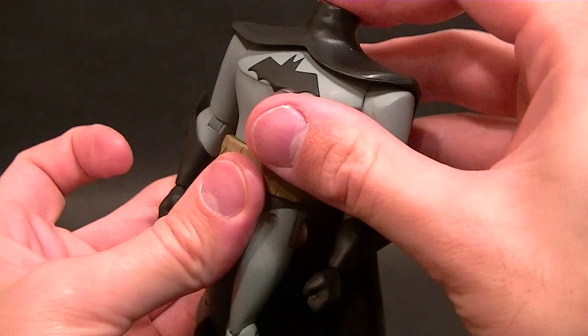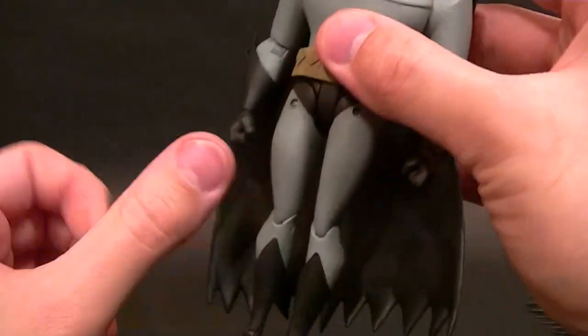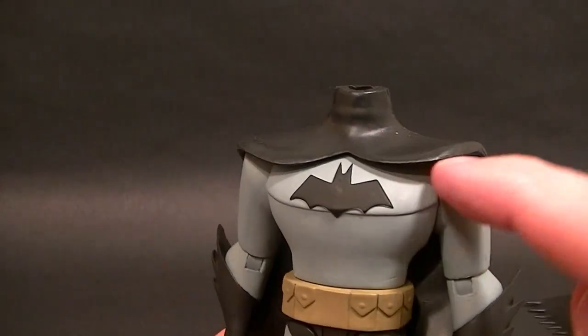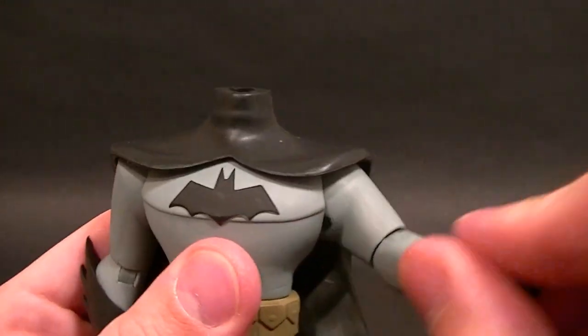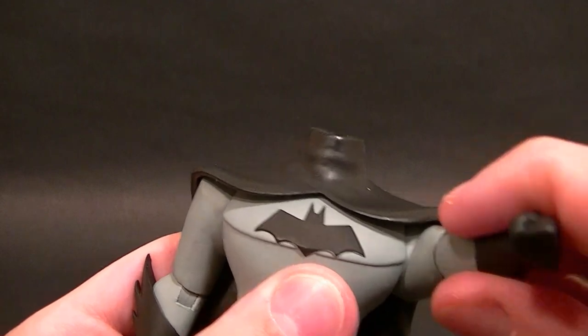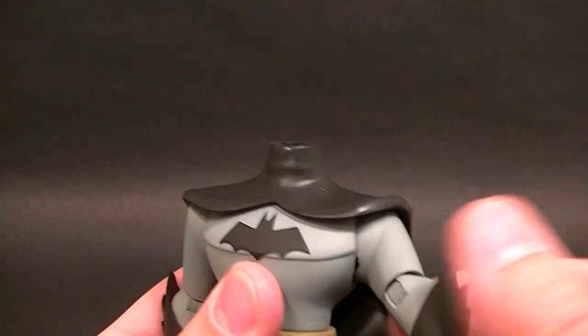All right let's look at the capes really quick so I can put one of them on and leave it on. This is the one that he comes with in the packaging. You can see it's drooped over the shoulder more, so you can still pose him but like I said the posing is still very limited. All you're going to get is that forward motion for the most part but that's okay.